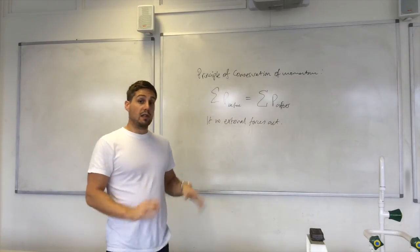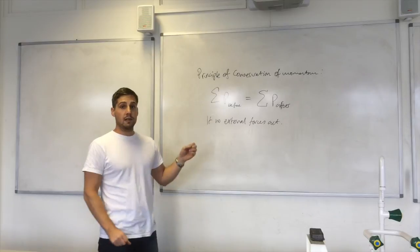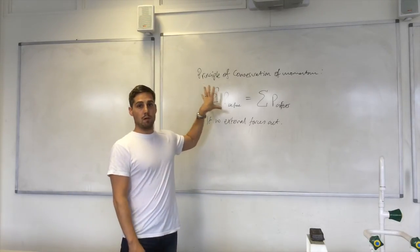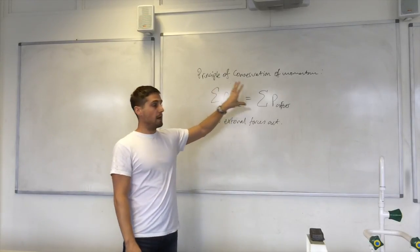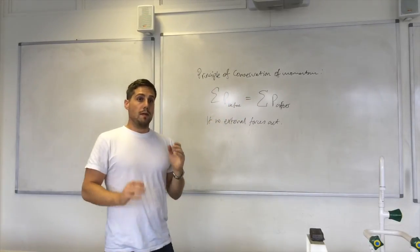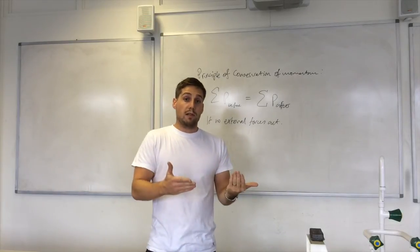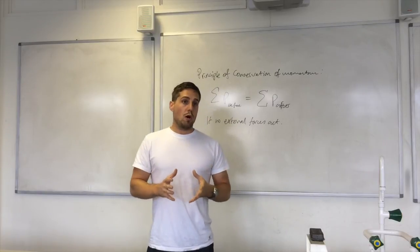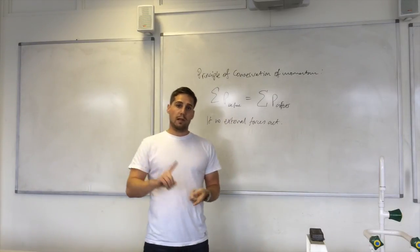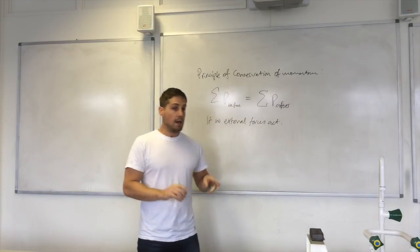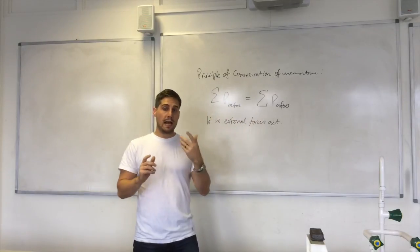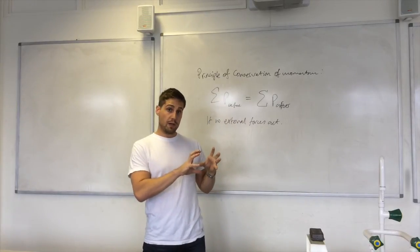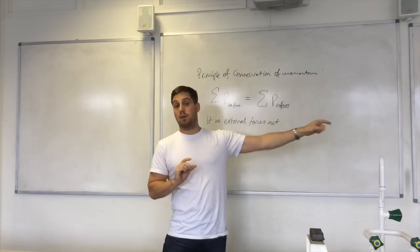So every time an object changes its momentum for the sum of the momentum of the system before and after to be equal, there must be some other object must change its momentum as well. So let's take an example of a cannon firing a cannonball. Two objects, cannon, cannonball. You fire the cannonball. So the cannonball's momentum changed. It went from being stationary to moving at high velocity.